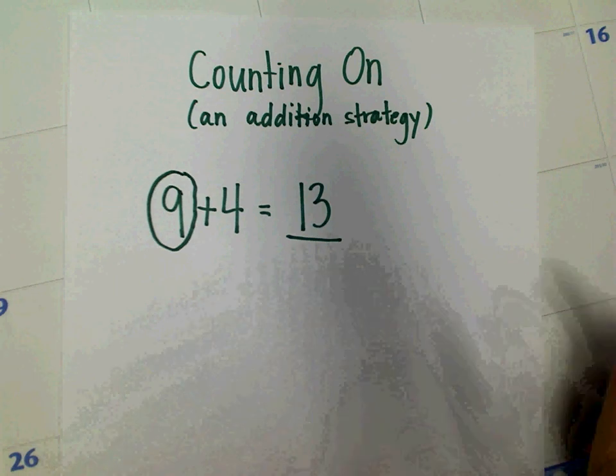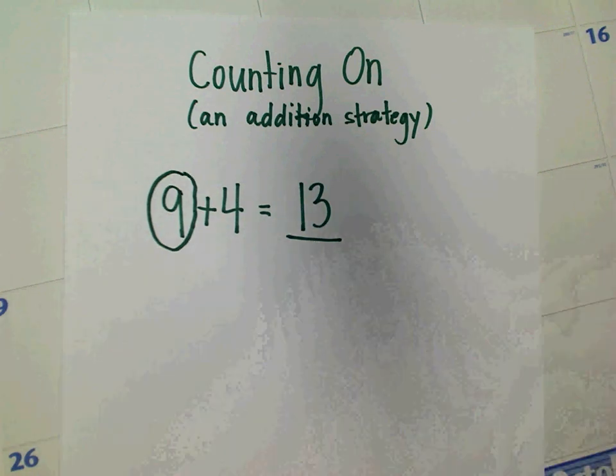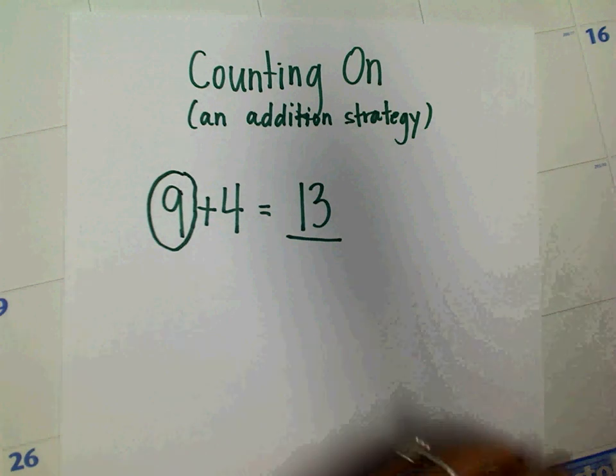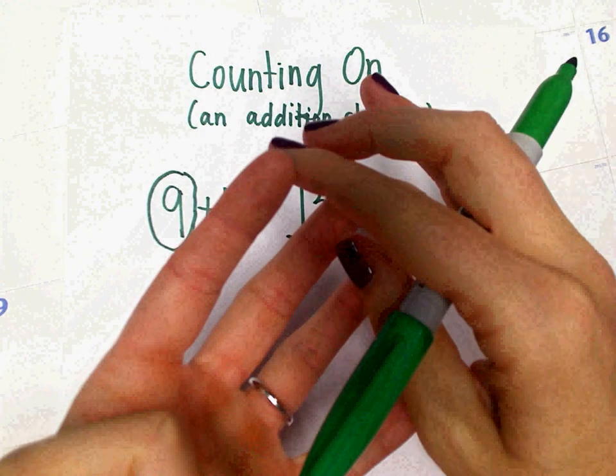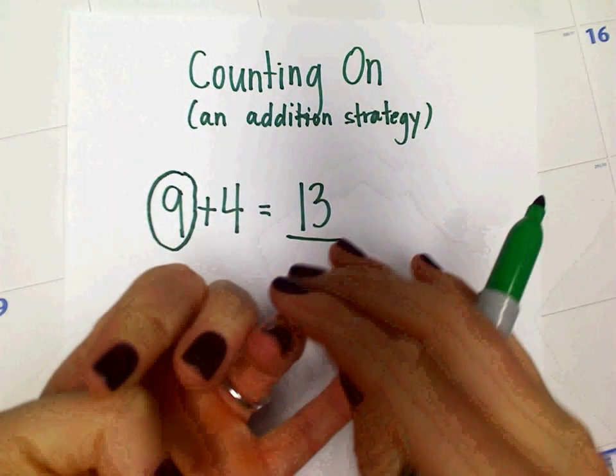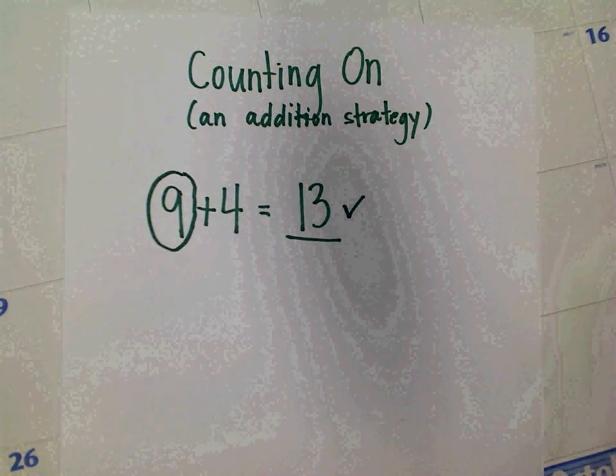I always tell scholars to go back and double check because this strategy can be tricky at times. So I'm going to go back and I'm going to put 9 in my head and hold 4 fingers up that I'm counting on with. And I'm going to say 10, 11, 12, 13. And I'm going to put a check mark to show that I've double checked.